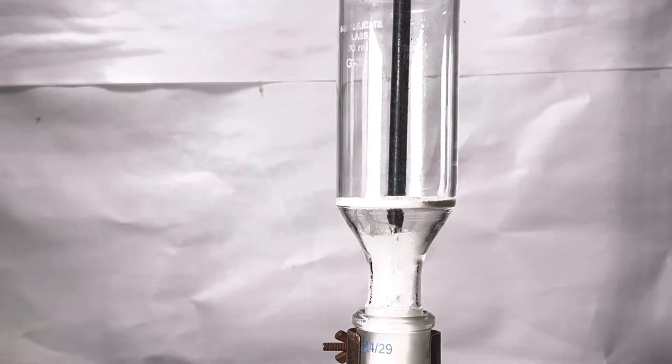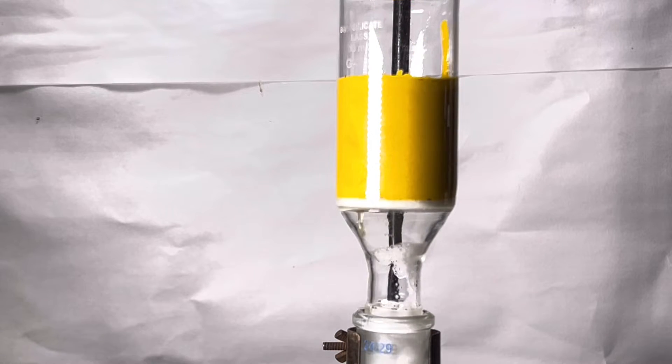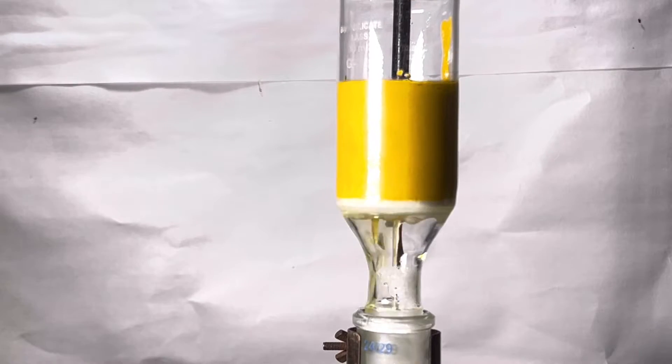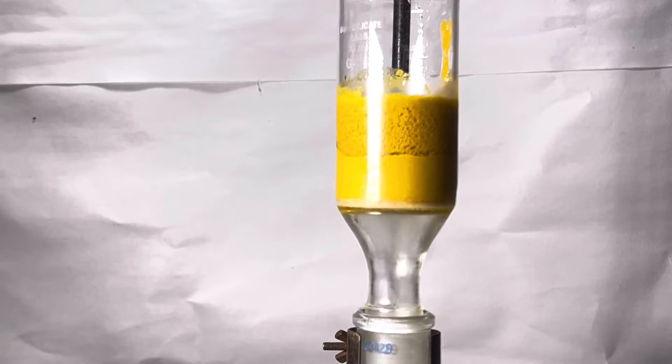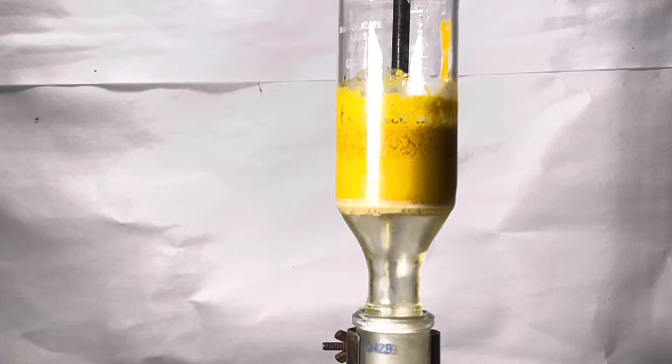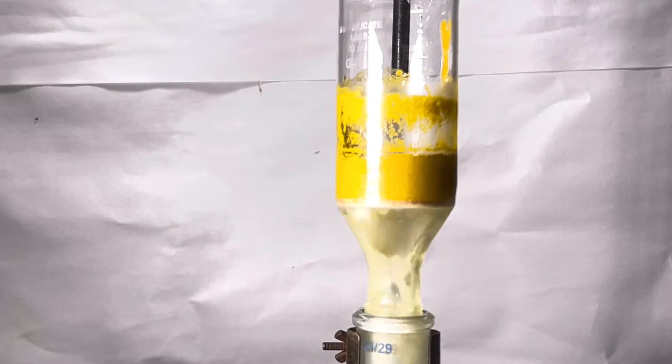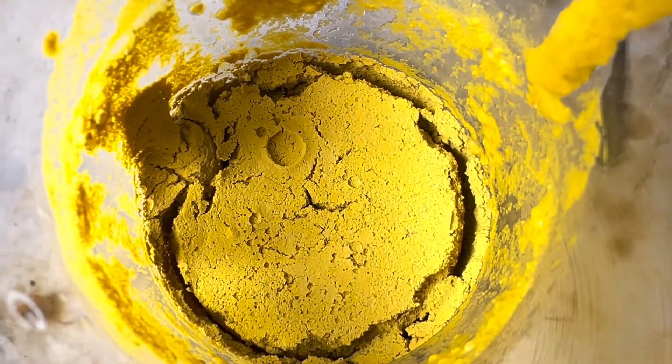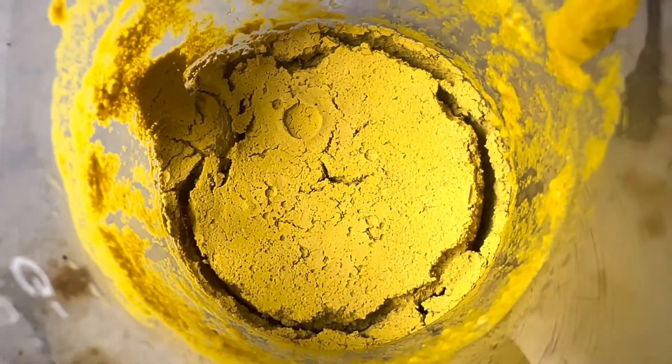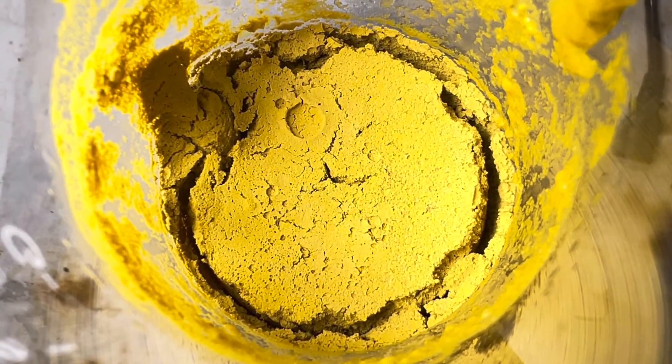Now vacuum filter the product using a Buchner funnel. The product was washed 3 to 4 times with cold water to remove all the water soluble impurities. The vacuum was turned on for few minutes to completely dry the product. Here is the crude product diazoaminobenzene. The weight of the dry crude product is 11.2 grams.